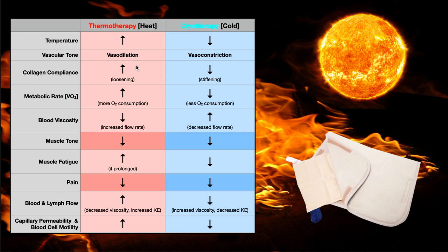In terms of collagen compliance, heat is going to cause collagen to become more compliant. Collagen is that protein that gives tissues tensile strength. If we want to loosen tissues up, we use heat, which increases the compliance or extensibility of that collagen and makes them looser. This can be important if our goal is to increase range of motion around a particular joint. So if muscles and the associated connective tissue are really tight, applying heat could increase that collagen compliance, loosen those tissues, and allow us to get some extra range of motion at a particular joint. Increasing range of motion is one of the major considerations for using heat.